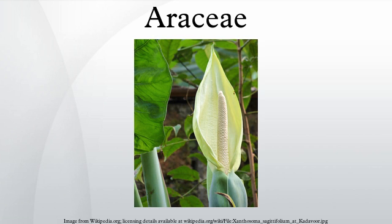Anthurium and Xanthosoma are two well-known members of this family, as are Colocasia esculenta and Xanthosoma roseum. The largest unbranched inflorescence in the world is that of the Amorphophallus titanum. The family includes many ornamental plants: Dieffenbachia, Aglaonema, Caladium, Nephthytis, and Epipremnum, to name a few.